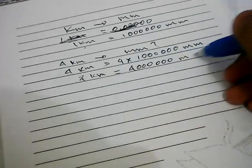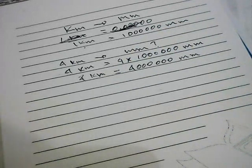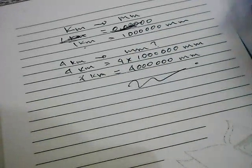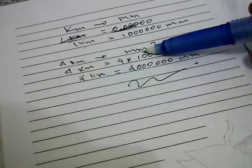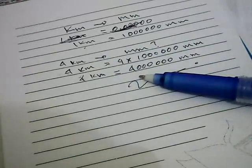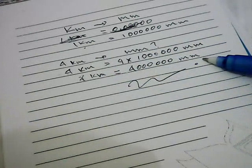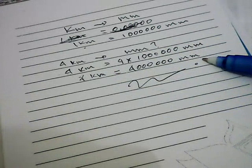Alright, that's it. That's the result from the conversion between four kilometers into millimeters, and the result is four kilometers is equal to four million millimeters. Alright, thank you for watching.